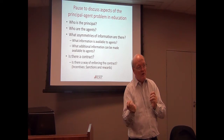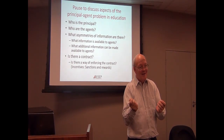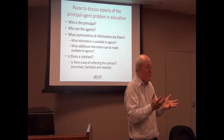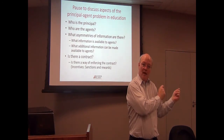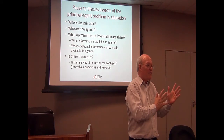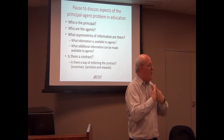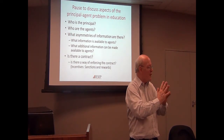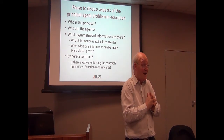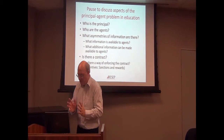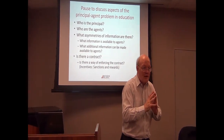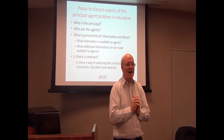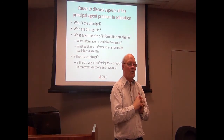When the state is the principal, the agents are clearly the teachers. When the parent is the principal, the agent could be the teachers, but it could also be all of us involved in the education system — they want us to act on their behalf. So we have to think of it from both perspectives. What asymmetries of information are there? What information do teachers have that we lack, and that would be necessary for us to hold teachers accountable?